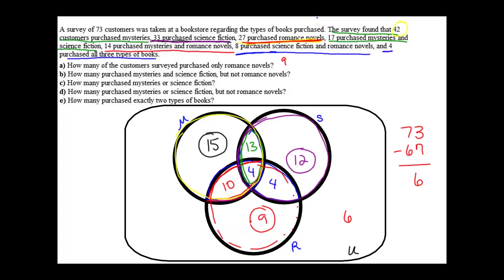How many purchased mysteries and science fiction but not romance? Look very carefully at the words 'and' and 'or.' With 'and,' that's the intersection — we want the intersection of mysteries and science fiction, but not romance novels. So we can't take into account the 4 that also bought romance novels. That would be only 13 as the answer.